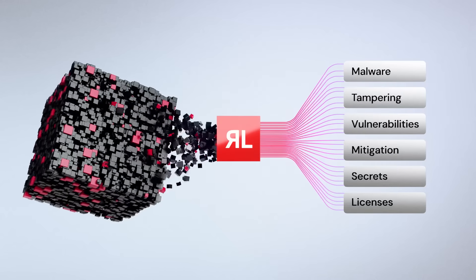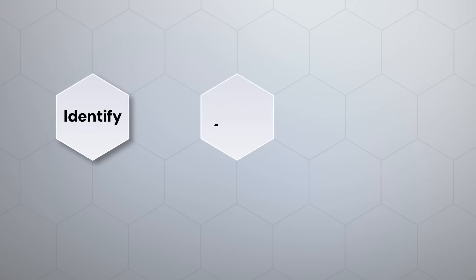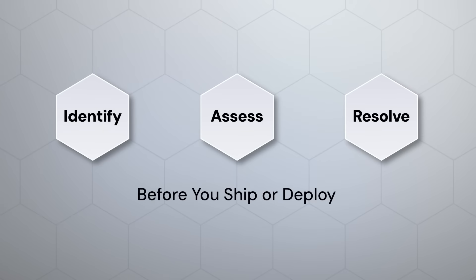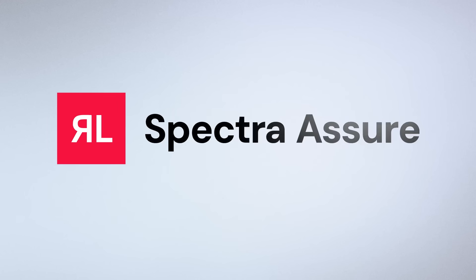This process delivers a comprehensive risk analysis report that lets you identify, assess, and resolve critical issues, delivering the trust and assurance you need before you ship or deploy your software. RL Spectra Assure for software supply chain security. Know when your software is malware.